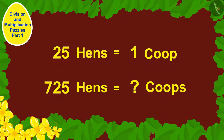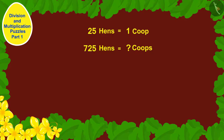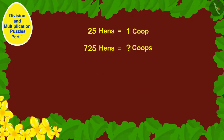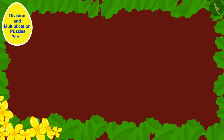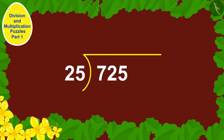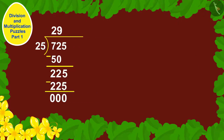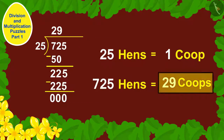Children, can you help Babban? If you wish to, you can pause the video and find the answer. We have to use the process of division to find a solution to this question. We can find the answer by dividing 725 by 25. Babban would have to build 29 coops to keep his 725 hens.